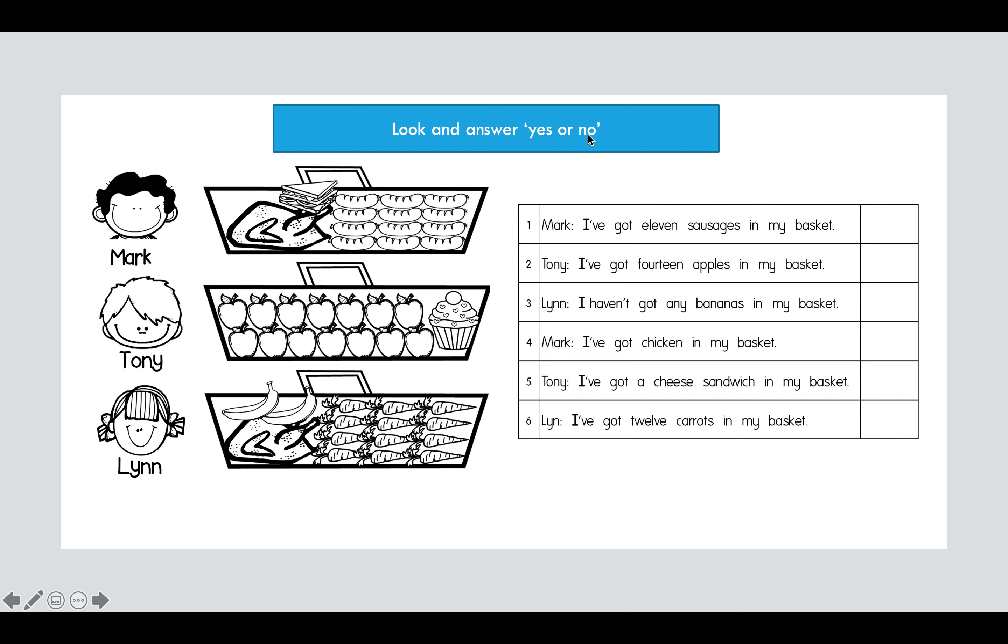Yes or no. All right, so there are three people here: Mark, Tony, and Lynn. So this is Mark's basket, this is Tony's basket, and this is Lynn's basket. All right, so there are six statements here. You have to read the statements and then I want you to identify whether the statement here is correct or wrong.